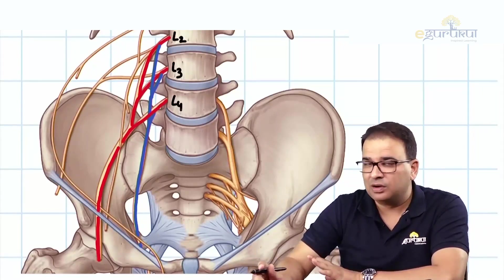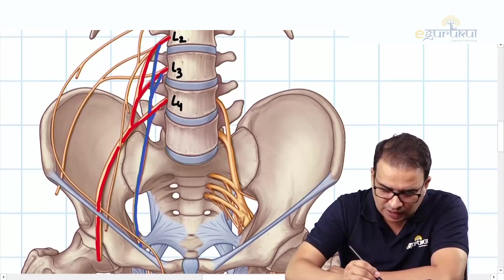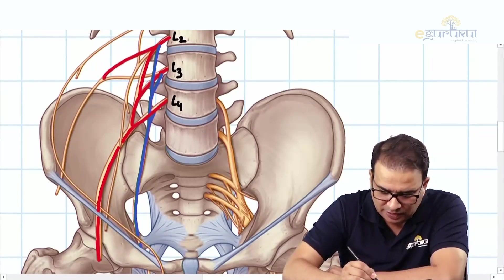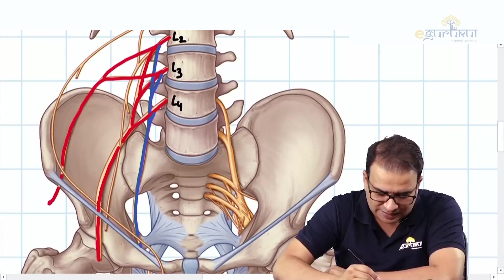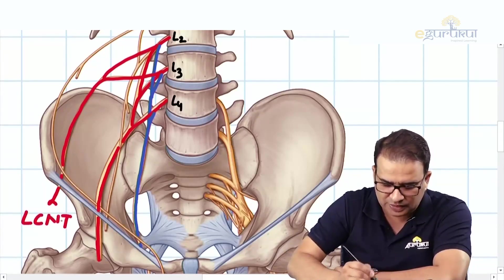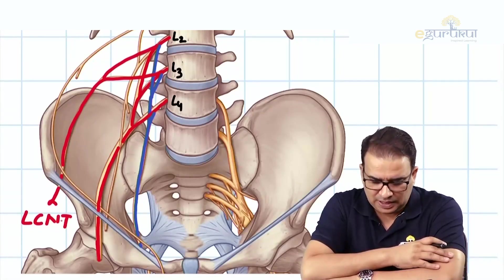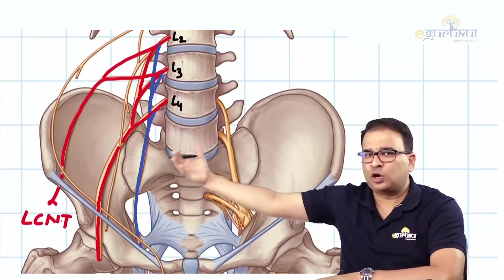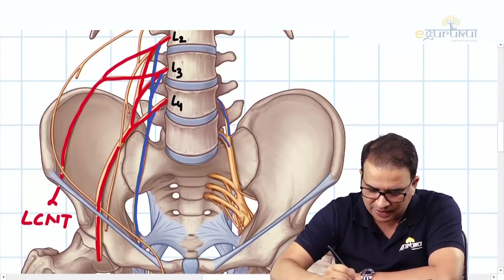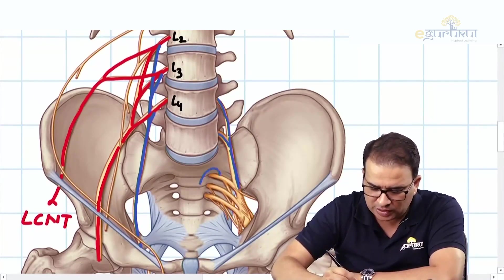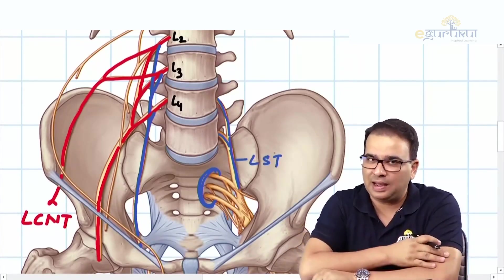Also visible is the lateral cutaneous nerve of the thigh from L2 and L3, tracing laterally deep to the inguinal ligament — you can call it the lateral femoral cutaneous nerve. The lumbosacral trunk is represented on the opposite side, coming from L4 and L5 and going below to join the sacral plexus. That is the story of the lumbar plexus.